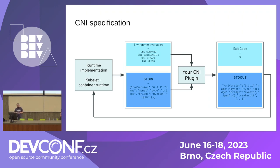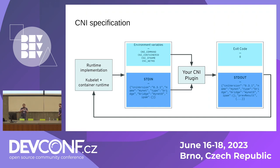Here's a quick example: you can use Flannel, OVN-Kubernetes, or whatever plugin you like for the default network, but with Multus you get additional interfaces — net0, net1, net-n — so you can have several of those and start doing things that are much more interesting.